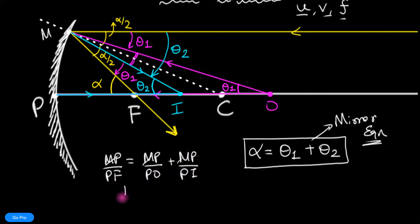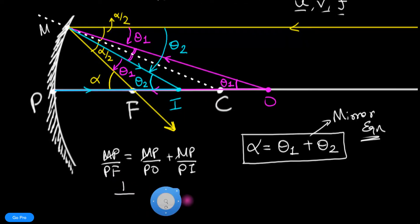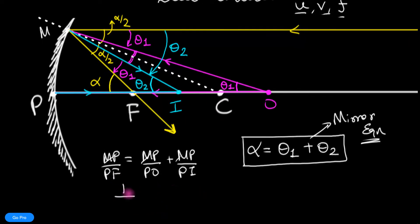Now, when we substitute, we really have to use sign conventions to make a general formula. I'm going to talk about sign conventions in great detail in the next video. But let me just substitute the values over here. This is 1 by F, mirror equation. And look at the number of steps, so short.